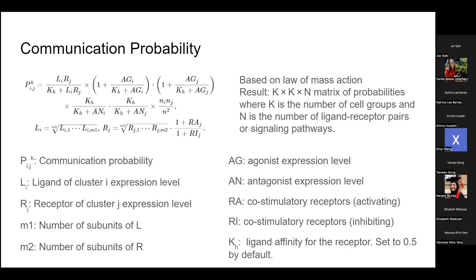A question was raised: do they have affinities annotated in their database? They don't — they curated from different data sources. However, someone noted that they tested the effect of changing K_H and it doesn't really change the results, which is good to know. They justified 0.5 by saying all the data has to be between zero and one.